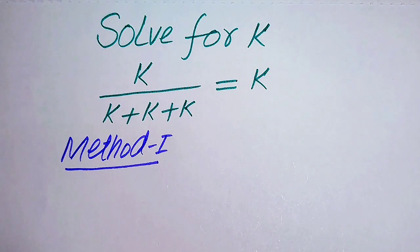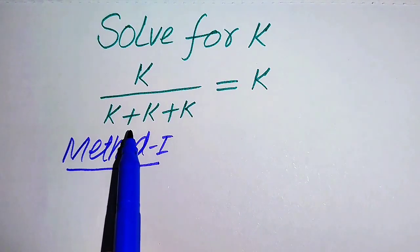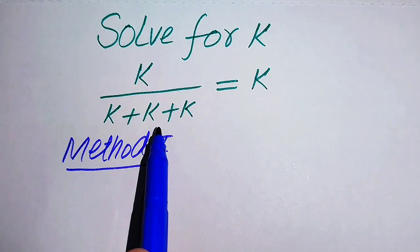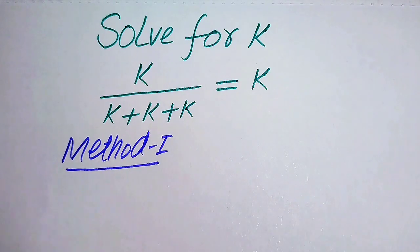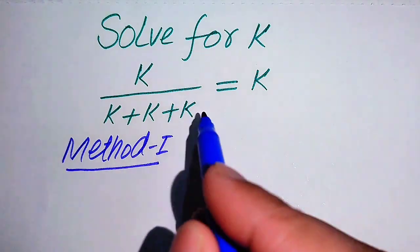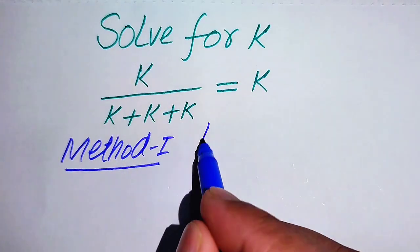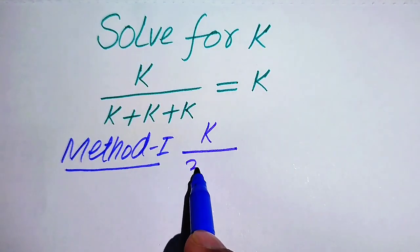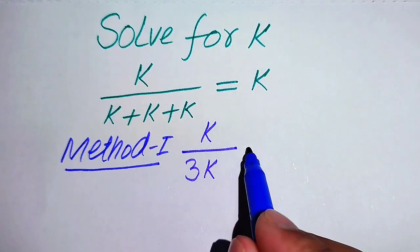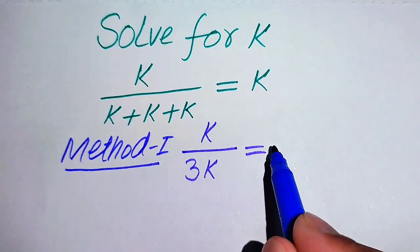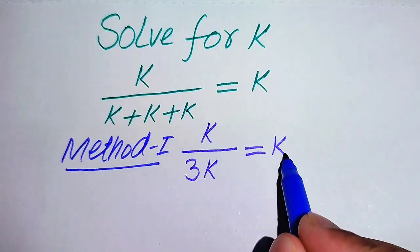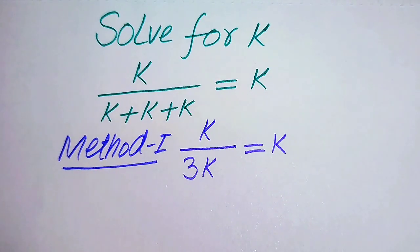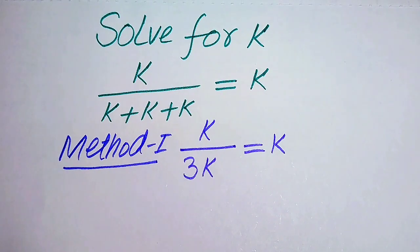In the first method, you can see that in the denominator there are three same variable terms added to each other. When we add all three values, it can be written as k divided by 3k equals k.